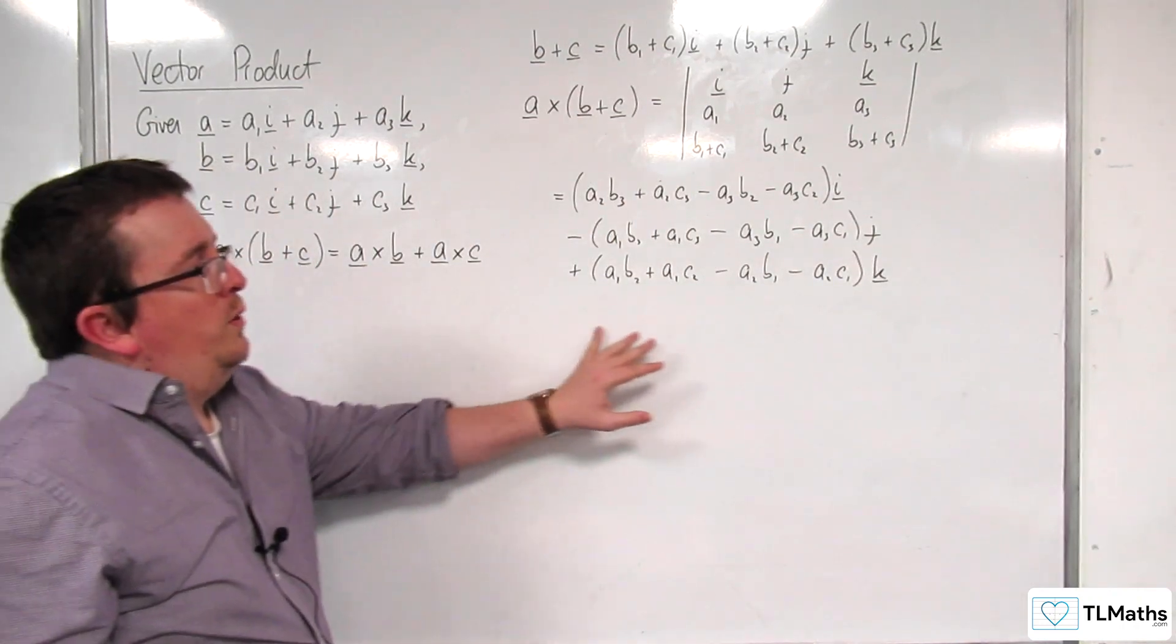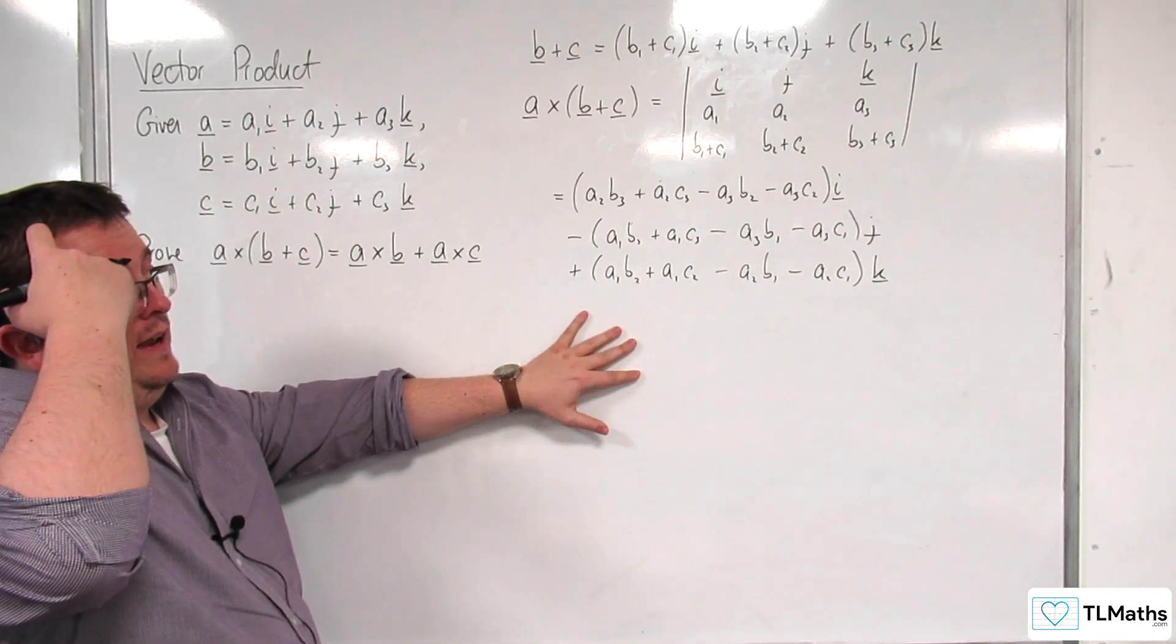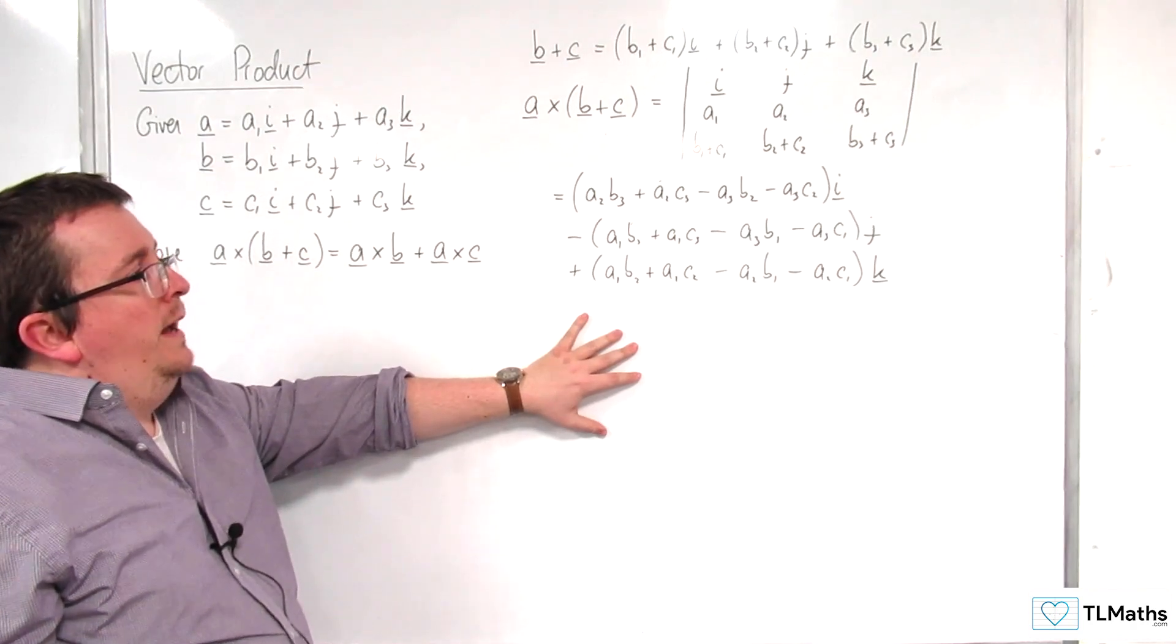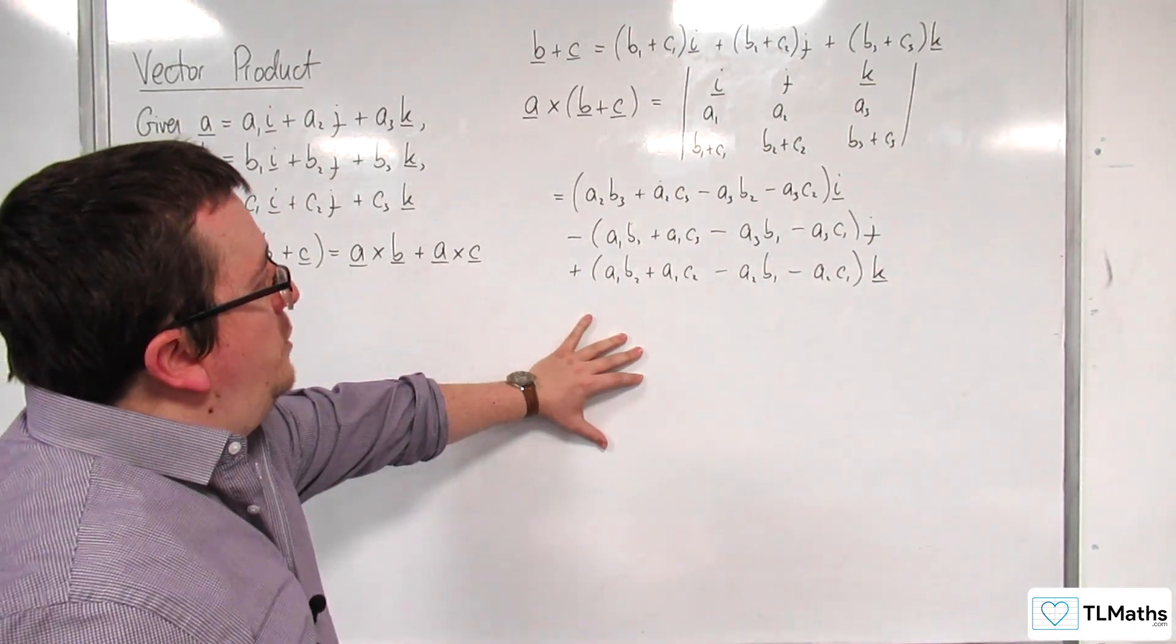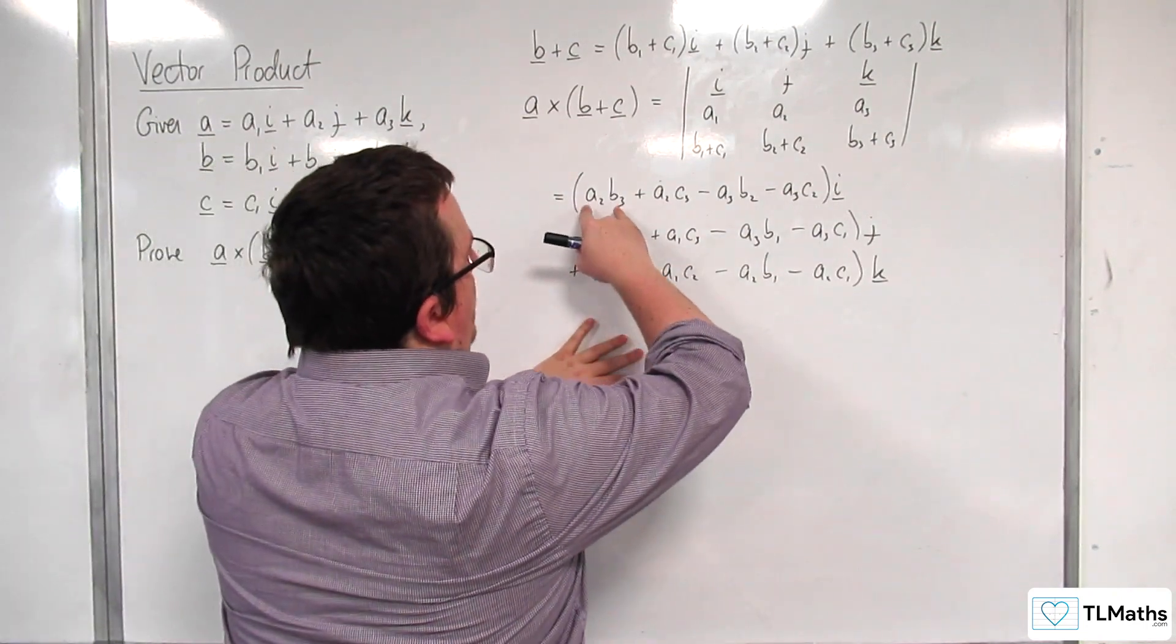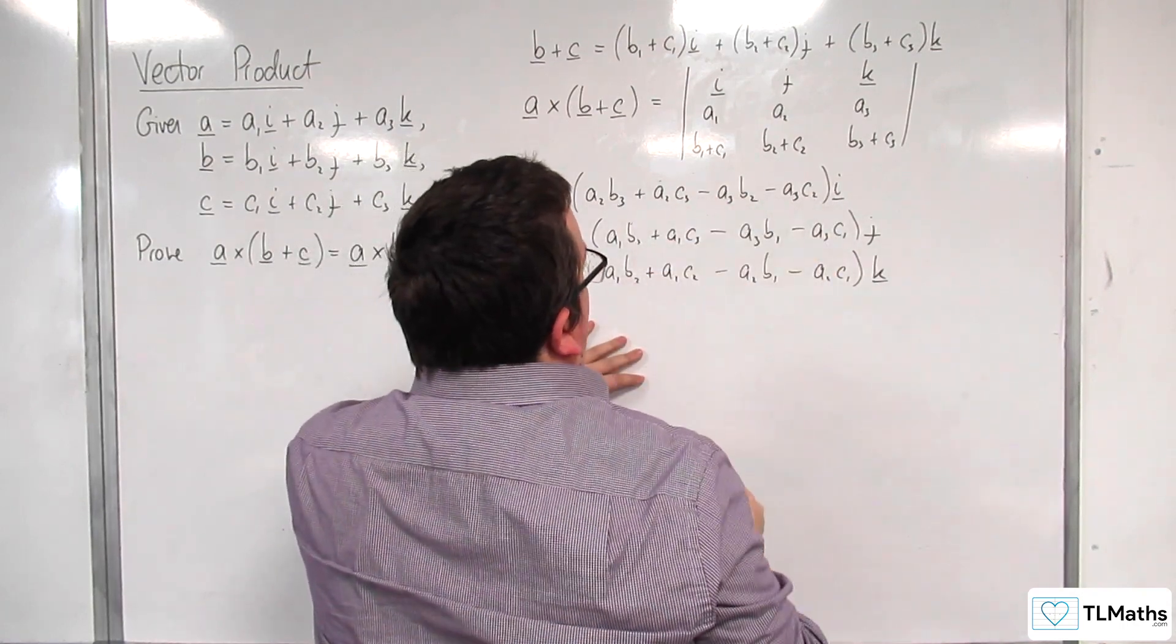Okay, so what I want to do now is split this up because at the moment it's not particularly friendly. So what we're going to want to do is make sure we've got the combinations of a's and b's together and a's and c's together.